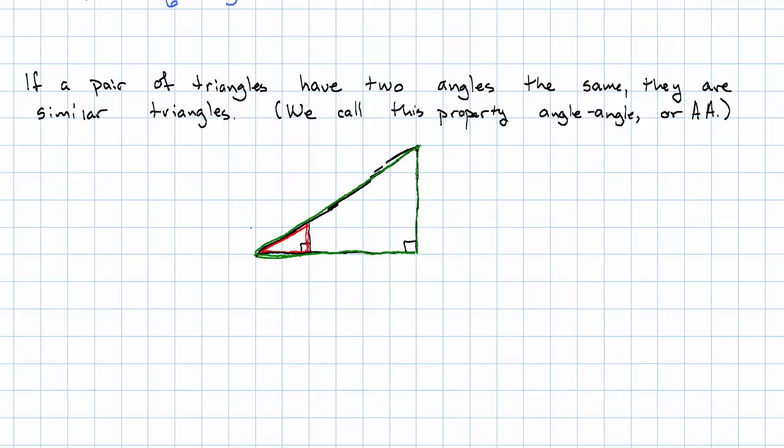We also know that this angle is the same between the two triangles because it's actually identically the same. In this picture, the red and green triangles are similar, and we can use that to figure out this height which we can't see easily from the grid lines. How?